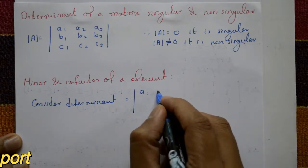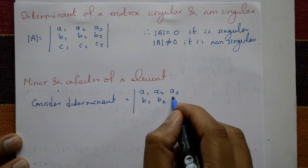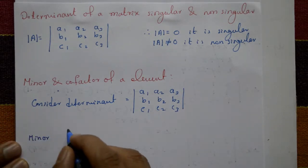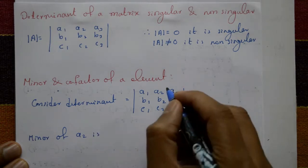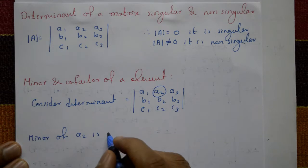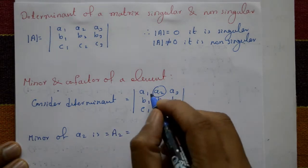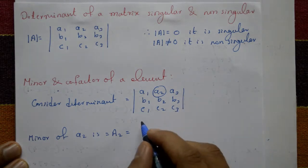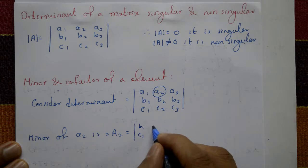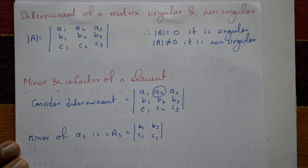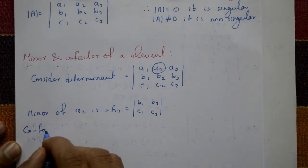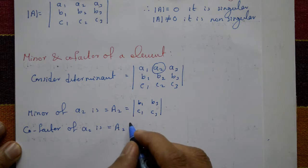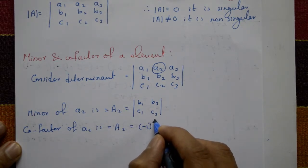Taking the minor of element A2: we ignore the first row and second column, and consider only the remaining elements B1, B3, C1, C3. So the minor of A2 is the determinant of B1, C1 / B3, C3. The cofactor of A2, denoted capital A2, equals minus 1 raised to the power i plus j times that minor.